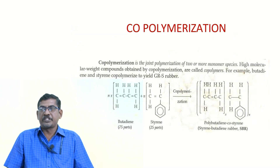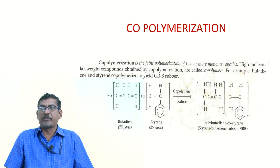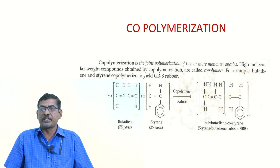The third type of polymerization is co-polymerization. In co-polymerization, a minimum of two types of monomers are involved, no byproducts are formed, and the product is not exactly a multiple of the monomer. The best example is the formation of polybutadiene-co-styrene.